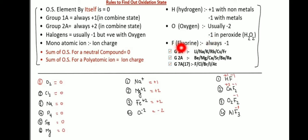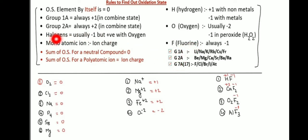Fluorine always has oxidation state minus one. Group 7A — the halogens, which are Fluorine, Chlorine, Bromine, Iodine, and Astatine.